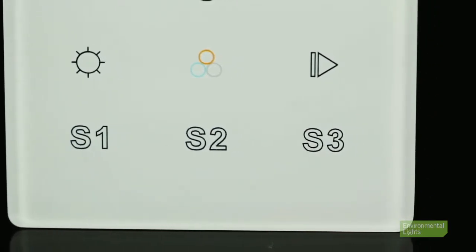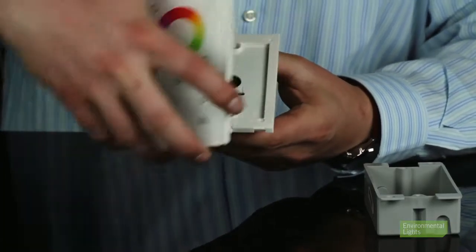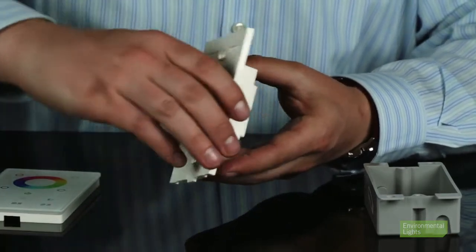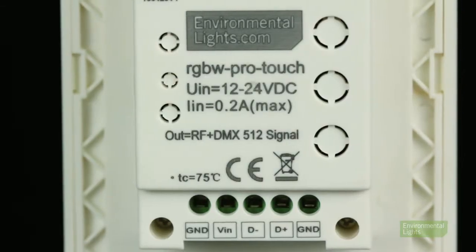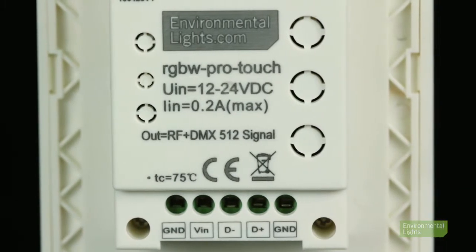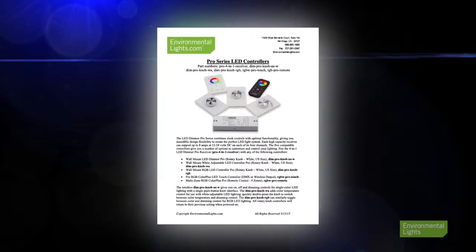The Pro RGB color plus LED touch controller mounts to a junction box like the wall mount Pro rotary knobs. This controller requires 12 to 24 volt DC power wired to the terminals on the back. See the product menu for more details.